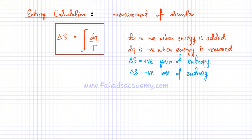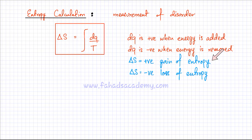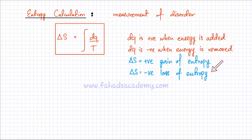Taking dQ as positive gives a delta S which is positive, meaning there is a gain of entropy — so whenever energy is being added to a system, there is a gain of disorder. Similarly, if dQ is taken as negative, delta S comes out negative, meaning there is a loss of entropy — so whenever energy is removed from a system, there is a loss of entropy.